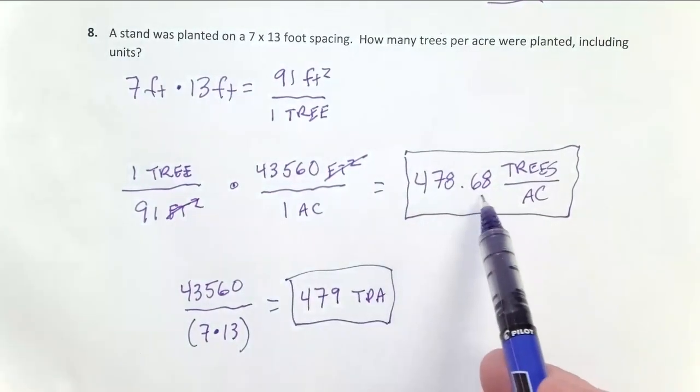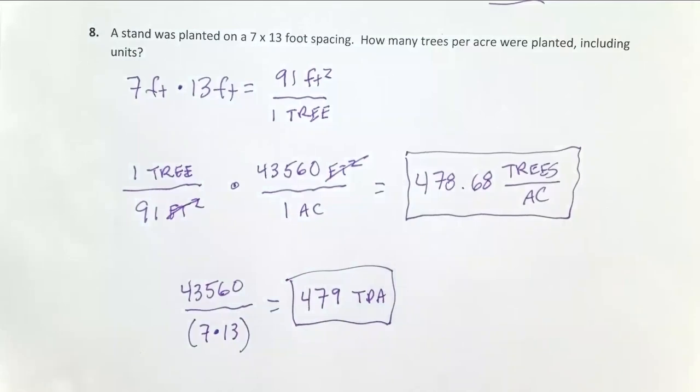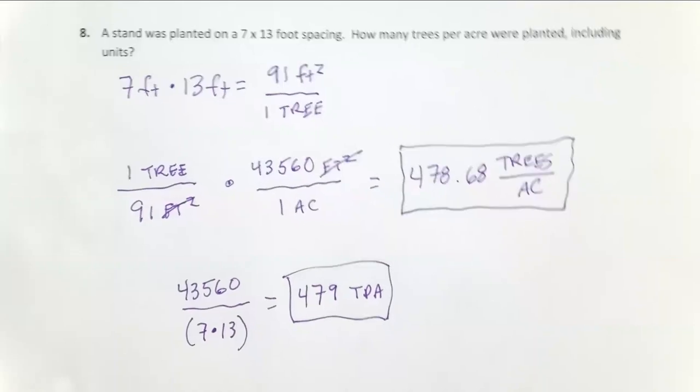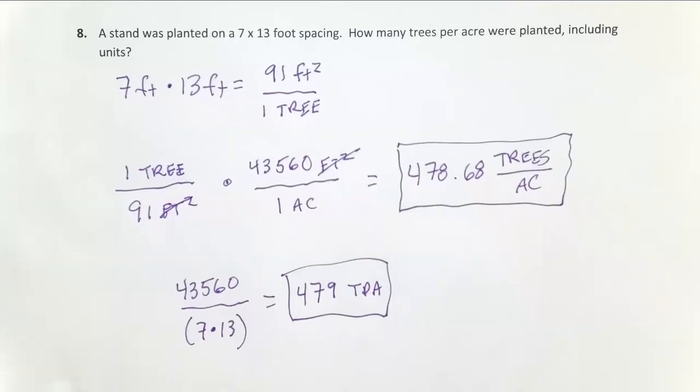Remember these extra decimals are mathematically correct, but in the real world with machine plants or hand plants and crew, it's unlikely you're going to be able to be anywhere near that precise. So this is going to be realistic enough for us. That's how you calculate the density of a planted forest from a given spacing.